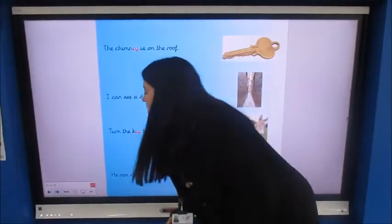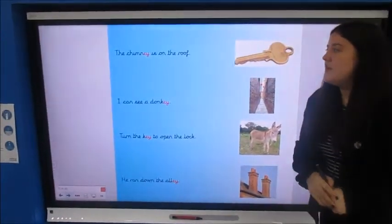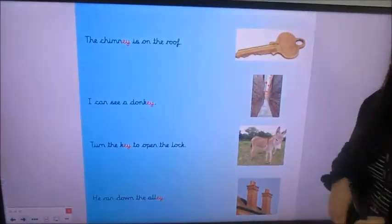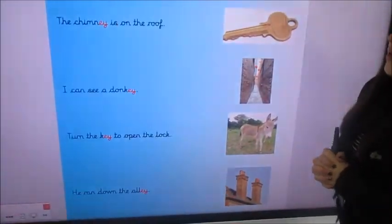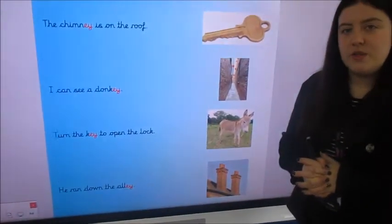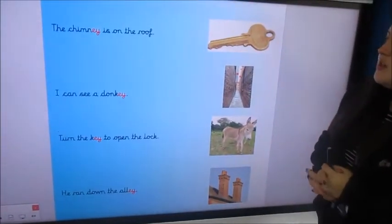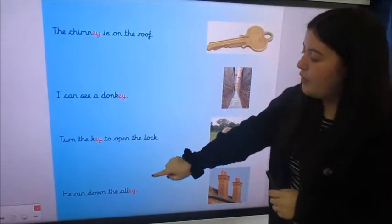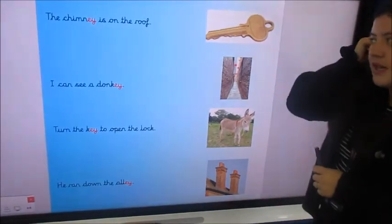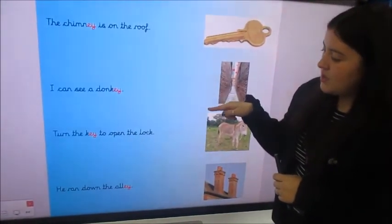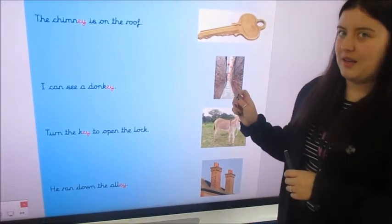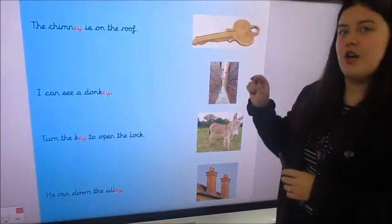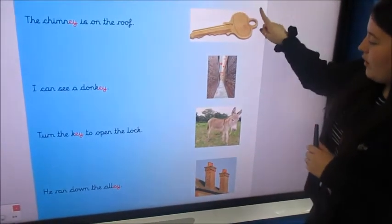Moving on to our activity. Now we've got something a little bit different. We haven't done this before. So you're going to need your whiteboard and your whiteboard pen, or if you've got some paper at home, you can use that instead. And we've got to do a little bit of reading. We've got four little sentences to read together, and in each sentence we've got an E word with the E, Y spelling, because we're doing E and a Y make E today. And we've got four pictures.